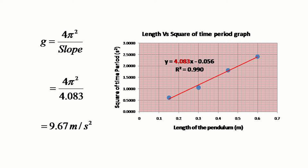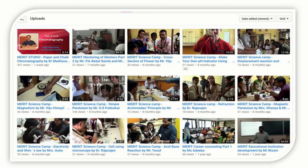In the next video, we will show that time period is independent of the mass of the pendulum. We will also show that time period does not depend on how big the oscillation is — that is, it does not depend on the amplitude. If you like this video, please subscribe to our channel and share the link with your friends.